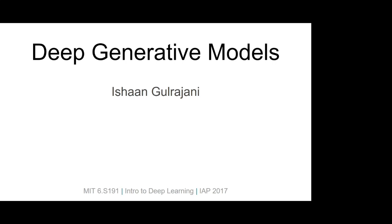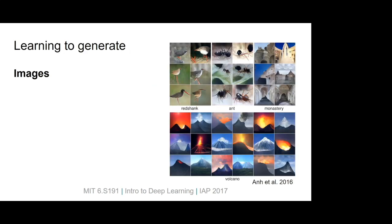Hi everybody, my name is Ishan. For the second half of today's lecture we're going to be looking at a class of models called deep generative models. So far in this class we've been looking at models that use neural networks to interpret data — most recently images, and before that sequences of text — taking that data as input and performing some kind of complicated sequential computation on it. The output has been more or less something reasonably simple: a probability distribution over classes, like whether a digit is 0 through 9.